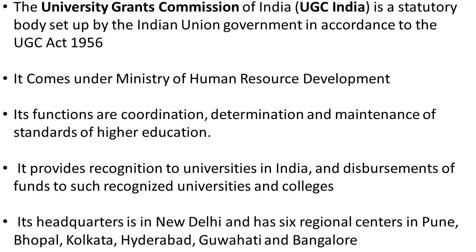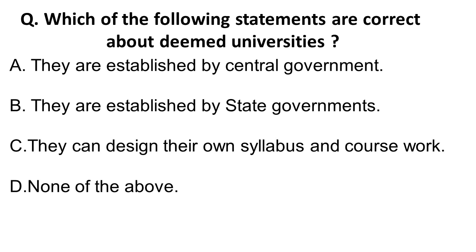The next question is: which of the following statements is correct about deemed universities? Deemed universities are also called private universities. Option A: they are established by central government. Option B: they are established by state government. Option C: they can design their own syllabus and course. Option D: none of the above.